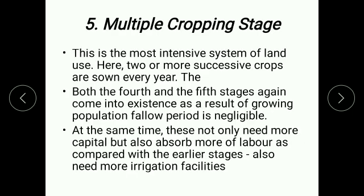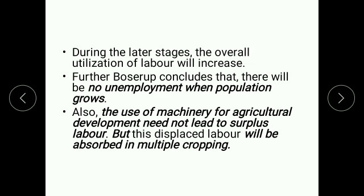The multiple cropping stage is the last stage of agricultural development and is the most intensive system of land use. Here, two or more successive crops are sown every year. Both the fourth and fifth stages come into existence as a result of growing population. The fallow period is negligible. These stages not only need more capital but also absorb more labor because of the multiple cropping, and as compared to earlier stages also need more irrigation facilities. During the later stages, the overall utilization of labor will increase.